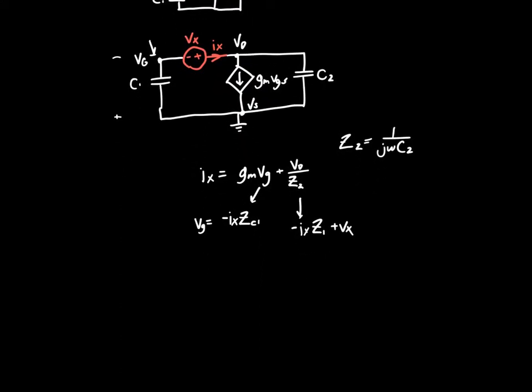Now we have our full equation. So IX is equal to GM VG, or minus GM IX Z C1, plus VD, which is minus IX Z1 plus VX, over Z2. We can factor the IXs and the VXs. So IX, we've got a 1, we've got a GM Z1, and we've got a Z1 over Z2. And then for VX, it's just VX over Z2.